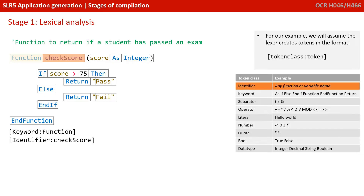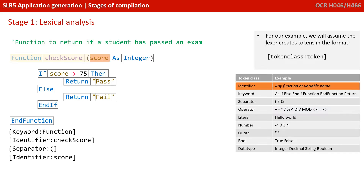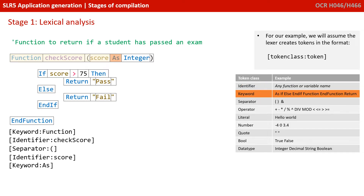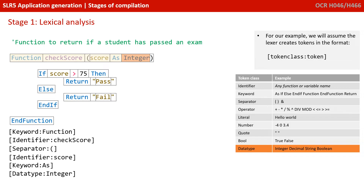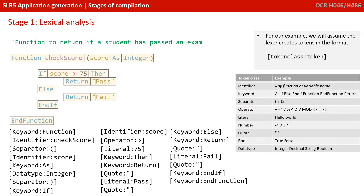It then proceeds and reads the next lexeme and turns that into a token: identifier, colon, checkScore. The open bracket is identified as a separator, score as another identifier, as as a keyword, integer as a data type, and the closed parentheses as a separator. If we carry on parsing the whole program, taking each lexeme one at a time, you can see what the program now looks like once it's been turned into a series of tokens.